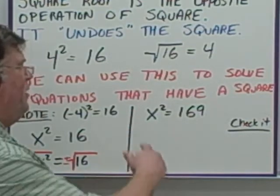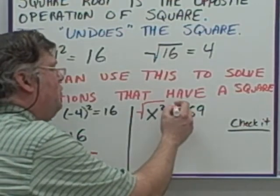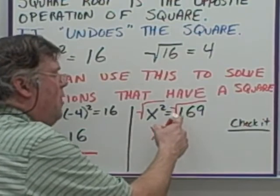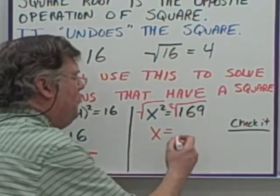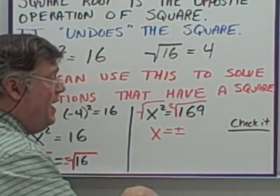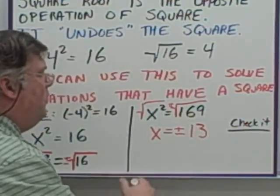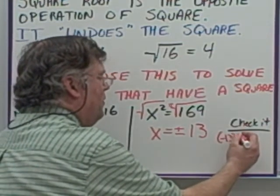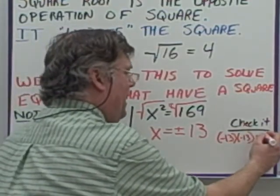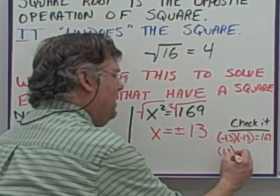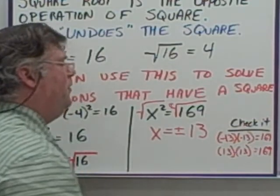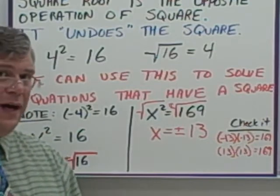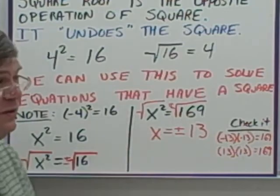Another example: x squared equals 169. Take the square root of both sides. The square root of x squared gives x, and we want both positive and negative versions of the square root of 169. Type 169 into your calculator, hit square root, and you get 13. So the answer is both positive and negative 13. Checking: negative 13 squared equals 169, and positive 13 squared also equals 169. Both are valid answers. When you have a square root equation, it's more likely to have two solutions than just one.